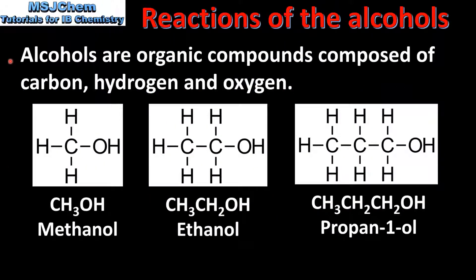Alcohols are organic compounds composed of carbon, hydrogen and oxygen. Here we have the first three members of the homologous series. They are methanol on the left, ethanol in the middle, and on the right we have propan-1-ol.